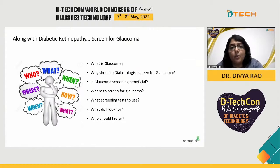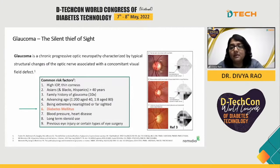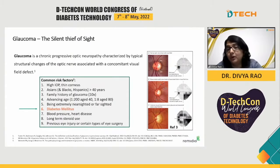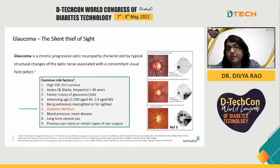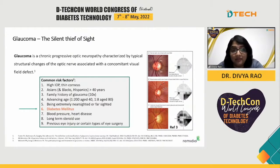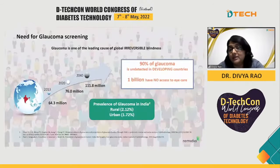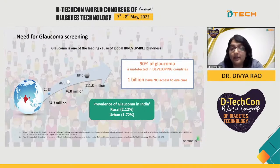The obvious next questions are: what is glaucoma? Why should a physician and a diabetologist screen for glaucoma? Is this really beneficial? What tests do I use, and who should I refer? Glaucoma is a chronic progressive optic neuropathy characterized by structural changes in the optic nerve associated with concomitant visual field effects. In simple terms, the optic nerve is a cable that connects the eye to the brain, and if left untreated, can lead to visual loss and blindness. While there are several risk factors for glaucoma, diabetes mellitus is one of them, and it's one of the leading causes of irreversible blindness. Alarmingly, 90% of those with glaucoma remain undetected in developing countries.